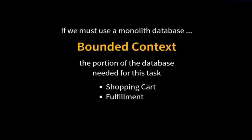If we have a monolithic database, we can pretend that it's lots of little databases with bounded contexts. A bounded context in an application is that portion of the database that applies to a specific domain. For example, a shopping cart and fulfillment both deal with products. A shopping cart's job is to show all the pictures and descriptions — it's a read-only view of the product catalog. By comparison, the fulfillment center needs only the product ID and quantity on hand. We can build two different bounded contexts around product details and expose them as bounded contexts into our microservices.